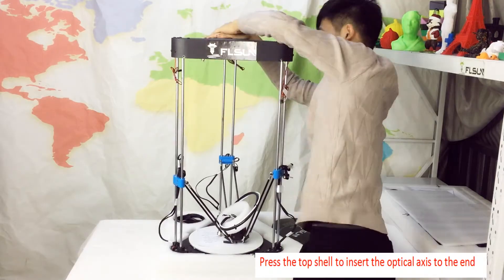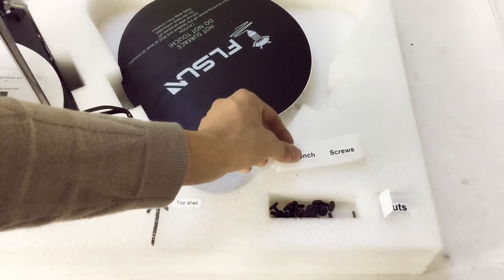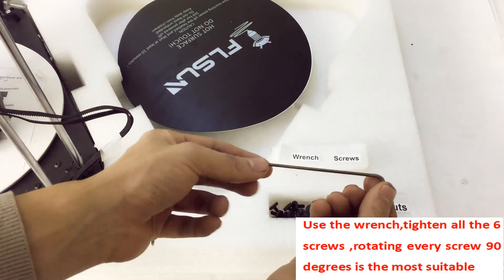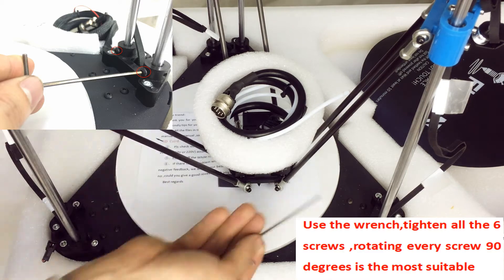Press the top shell to insert the optical axis to the end. Use the wrench, tighten all the 6 screws, rotating every screw 90 degrees is the most suitable.